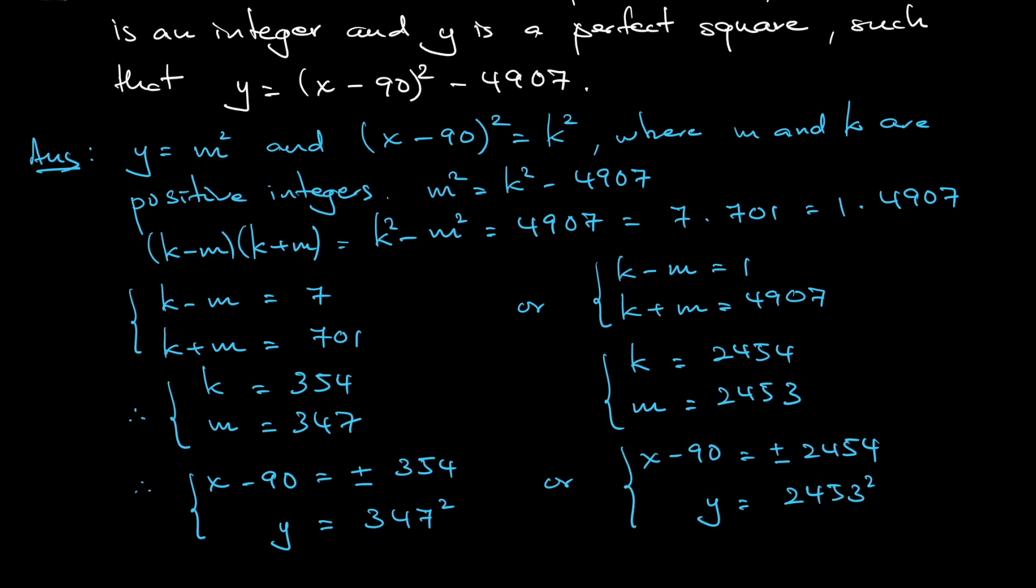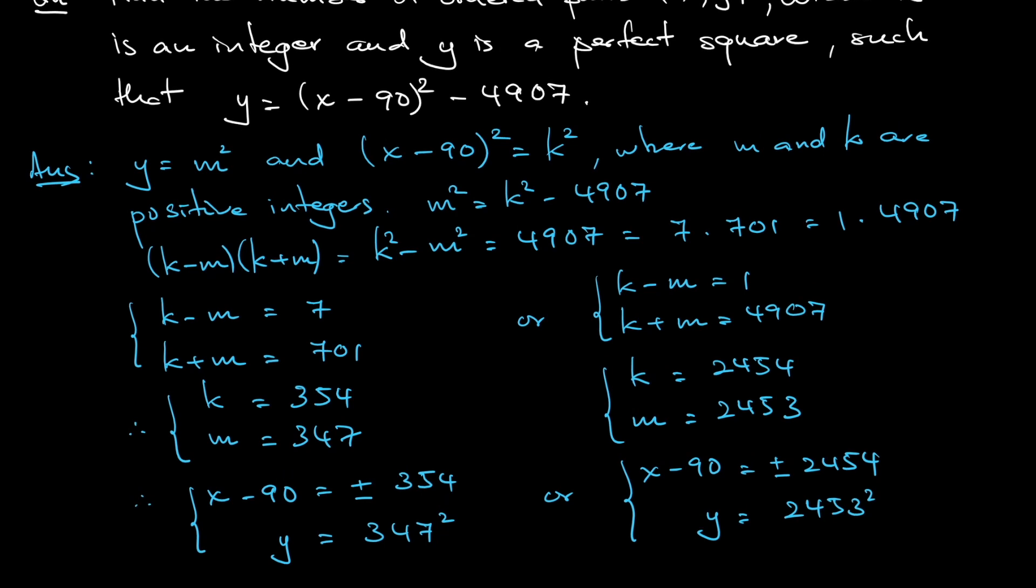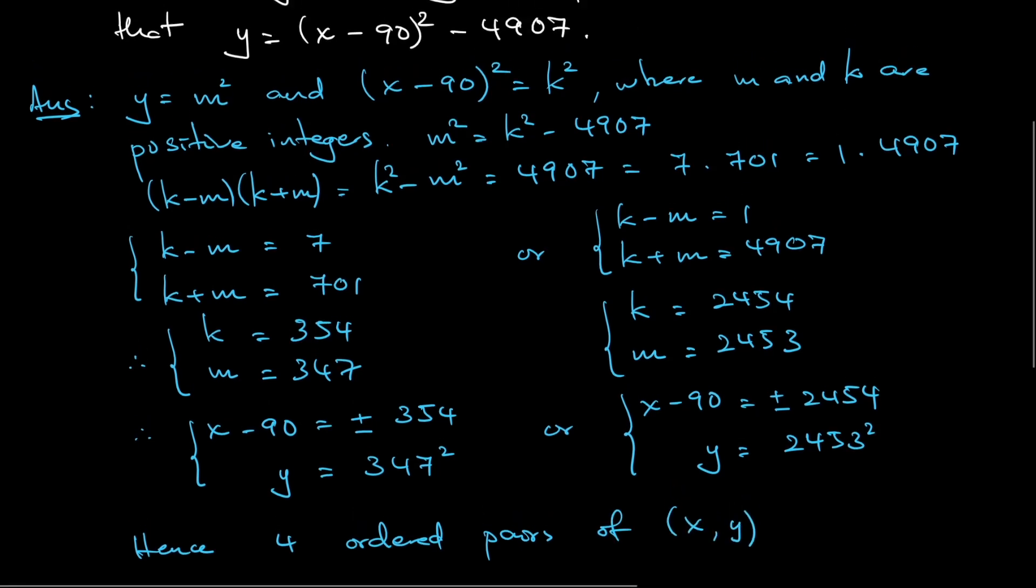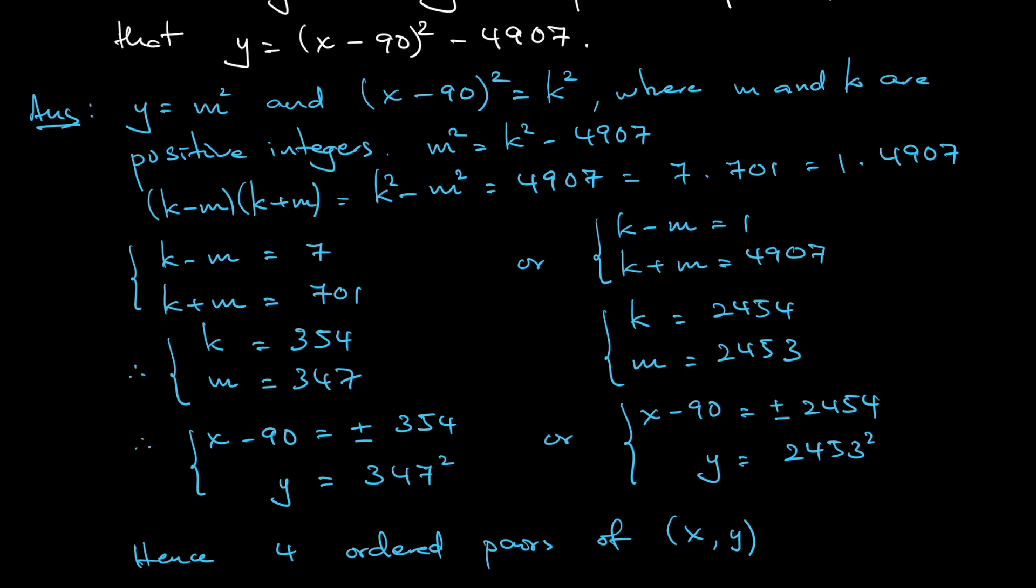I do not need to simplify this further, because the question only asks how many number of ordered pairs are there. So in fact, I would have 4. Plus or minus in the first one, plus or minus in the second one, and that means that hence, I would have 4 ordered pairs of (x, y). So the answer would be 4.